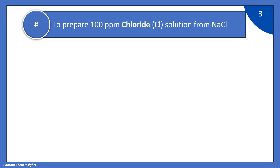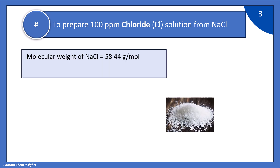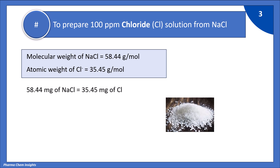To prepare 100 ppm chloride solution from NaCl, we need to understand the calculation first. The molecular weight of NaCl is 58.44 g per mol. The atomic weight of chloride is 35.45 g per mol. So, 58.44 mg of NaCl is equivalent to 35.45 mg of chloride. But we need 100 mg of chloride to prepare 100 ppm chloride solution.